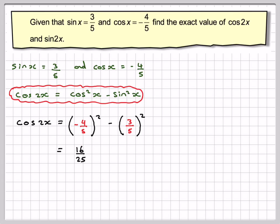Minus 4 fifths squared gives me 16 over 25 minus 9 over 25. 16 take away 9 is 7 over 25.